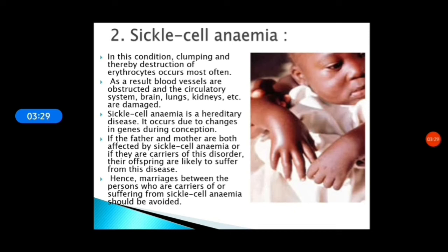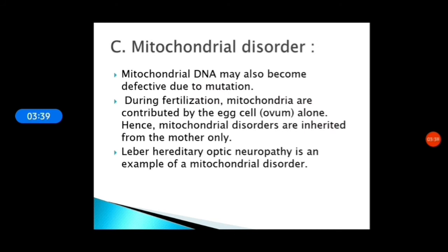Hence, marriages between persons who are carriers of or suffering from sickle cell anemia should be avoided. The next genetic disorder is the mitochondrial disorder. Mitochondrial DNA may also become defective due to mutation. During fertilization, mitochondria are contributed by the egg cell alone. Hence, mitochondrial disorders are inherited from the mother only. Leber's hereditary optic neuropathy is an example of a mitochondrial disorder.